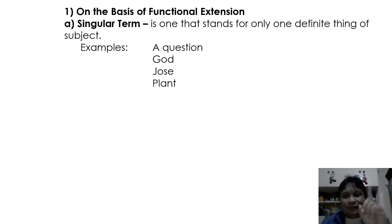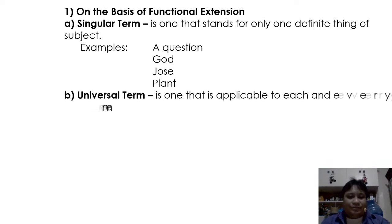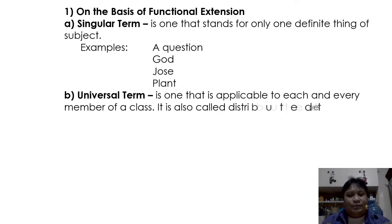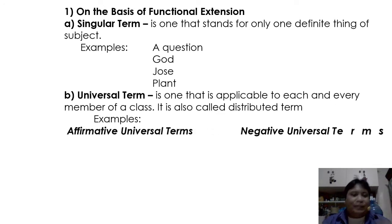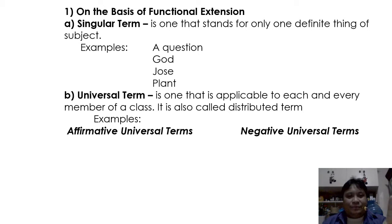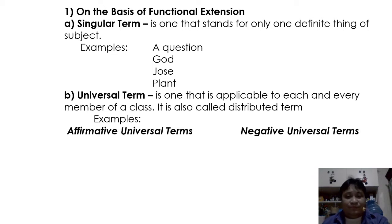The next type is the universal term — one that is applicable to each and every member of a class. It is also called a distributed term. There are two types of universal terms: affirmative universal terms and negative universal terms.